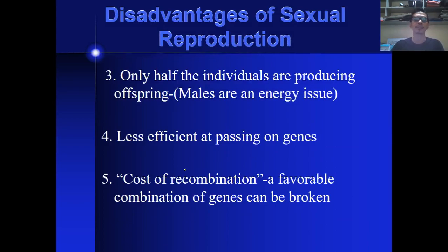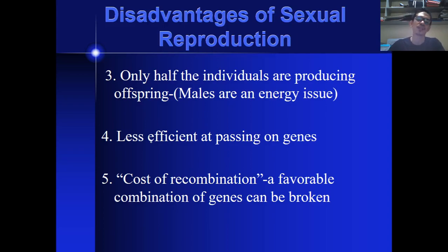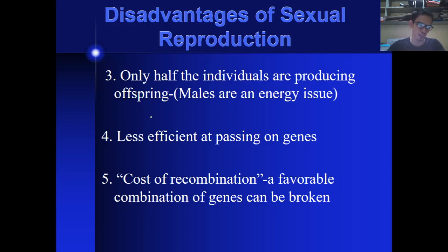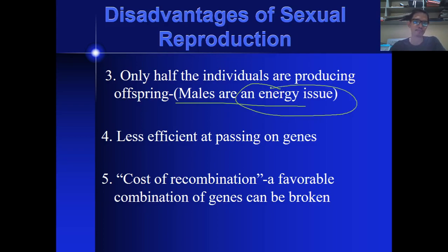Number three disadvantage: only half of the individuals produce offspring. For example, the female is the one that produces offspring — the male cannot. Males have an energy issue — they need to find, identify, and impress their mates in order to reproduce. You need energy to do that in order to produce offspring.